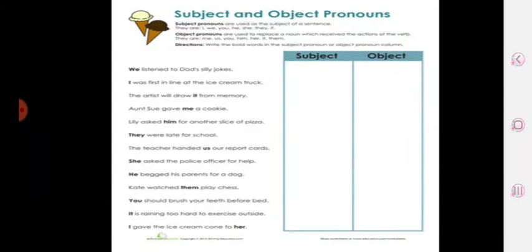I hope you know about subject and object pronouns now very well, so here is an exercise to check your understanding. First, revise it: what are subject and what are object pronouns? Subject pronouns are used as the subject of the sentence like I, we, you, he, she, they, and it. Object pronouns are used to replace a noun which receives the action of the verb like me, us, you, him, her, it, and them.